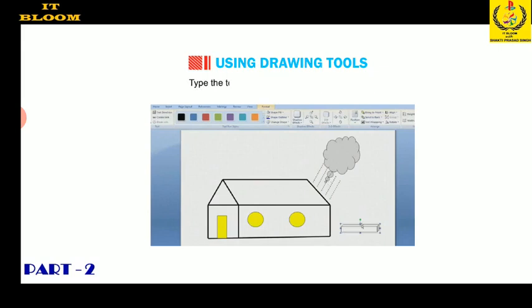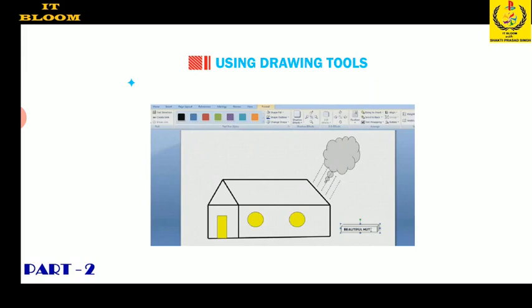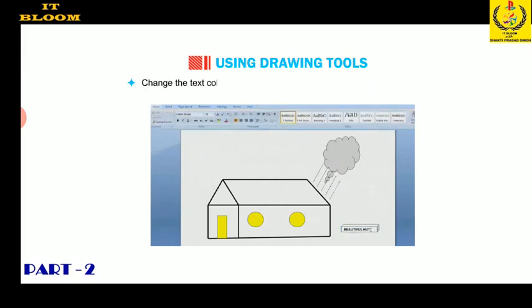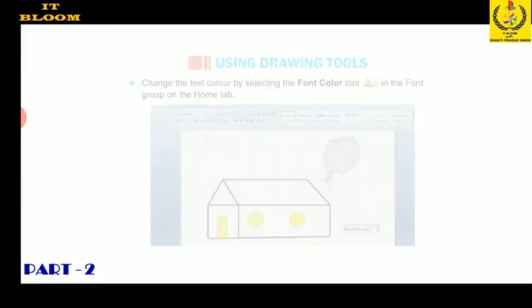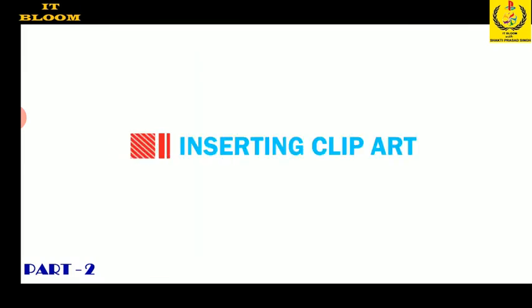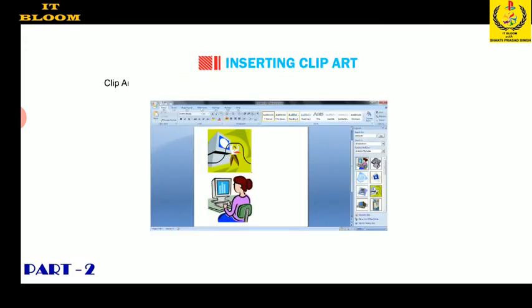Type the text 'Beautiful Hut' and select it. Change the text color by selecting the font color tool in the font group on the Home tab. Now we will discuss how to insert clip art.